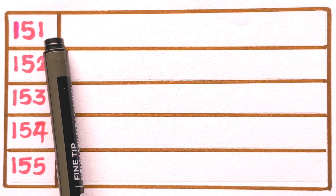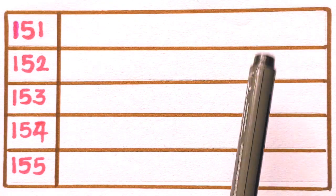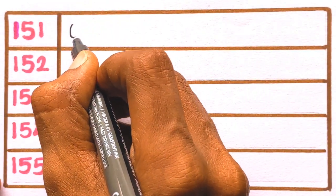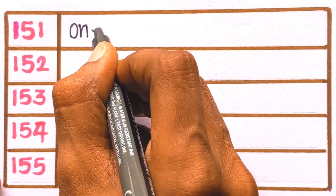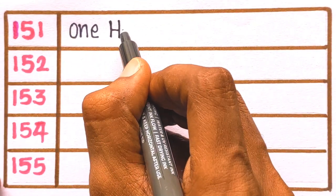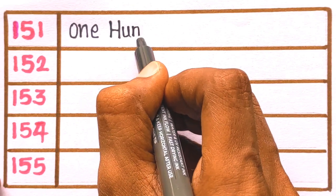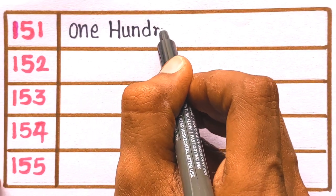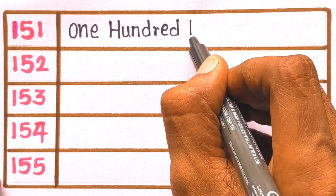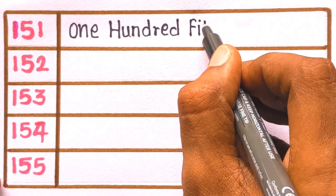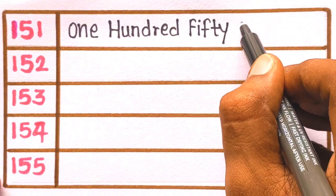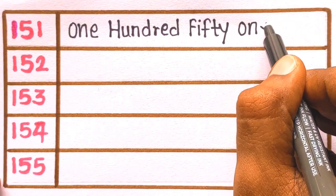At first, 151. One hundred fifty one. O-N-E, one. H-U-N-D-R-E-D, one hundred. F-I-F-T-Y, one hundred fifty. O-N-E. 151 is one hundred fifty one.